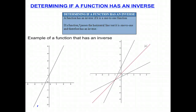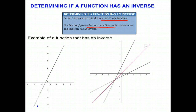Today we're going to learn how to determine if a function has an inverse. A function has an inverse if it is a one-to-one function. For a function to be one-to-one, it has to pass the horizontal line test. So if it passes the horizontal line test, then it has an inverse because that means it's one-to-one.